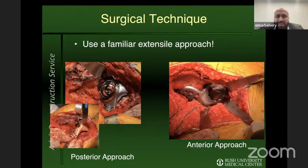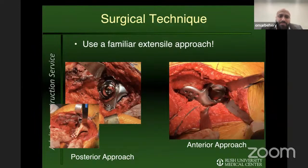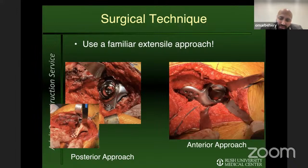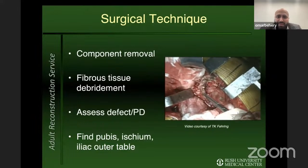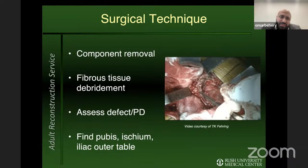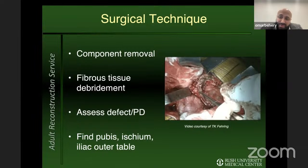For surgical technique, use a familiar extensile approach. I perform a posterolateral approach for this, though many surgeons I respect do this through an extensile anterior approach — use what you're most comfortable with. Start with component removal and wide debridement of any fibrous tissue around the rim and columns, which is needed to see the extent of bone loss and to fit the triflange implant. This differs from a distraction technique, where you sometimes want to preserve fibrous tissue to facilitate distraction.